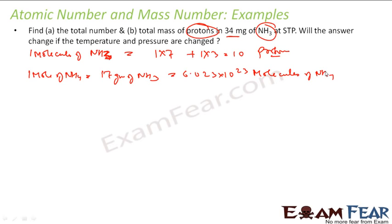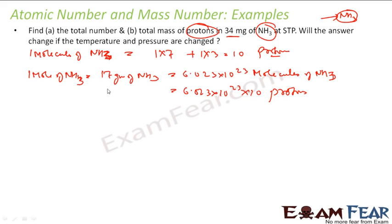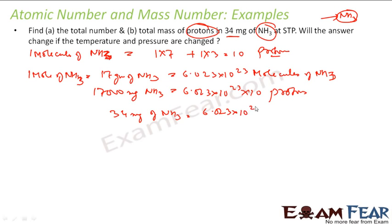Since ammonia is NH₃ it's molecules, not atoms. 17 grams = 6.023×10²³ molecules, and these molecules have 6.023×10²³ × 10 protons. We need 34 milligrams: 17 grams = 17,000 milligrams. So 34 milligrams of NH₃ gives 1.2046×10²² protons.